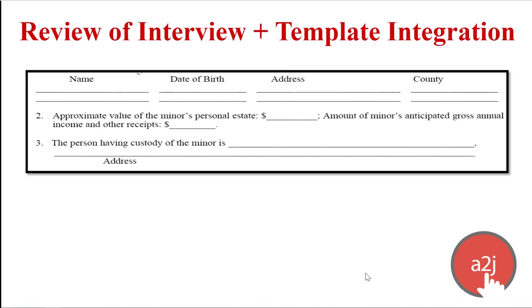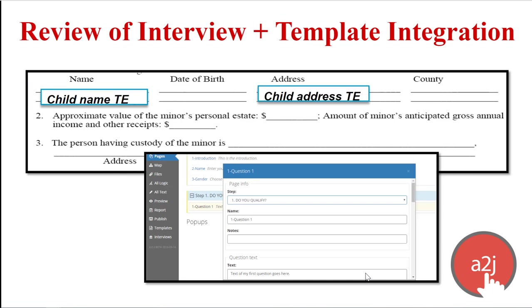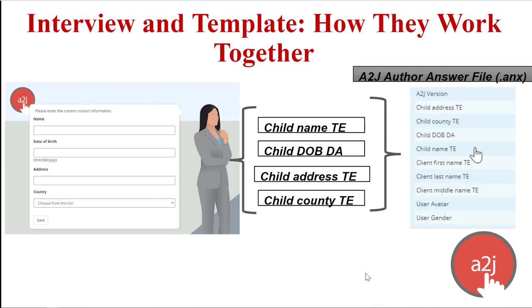You start with an underlying court form or legal document that you want to automate. That form is called the template. It can be automated using Hot Docs or, as you'll learn in video four, using the A2J Author Document Assembly tool. The template contains variables — all the blanks an end user would need to fill out to complete the form. Those variables are tied to specific questions in the interview that you will ask the end user. The end user answers the interview questions by filling in the blanks, and those answers are stored in the variables, which are stored in the answer file.